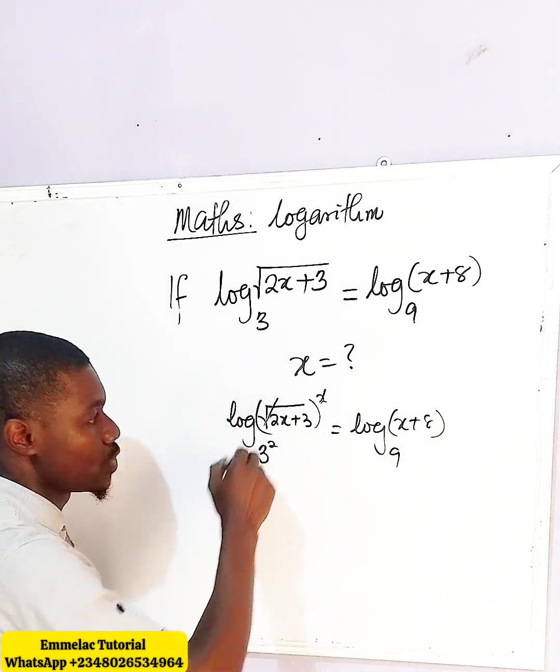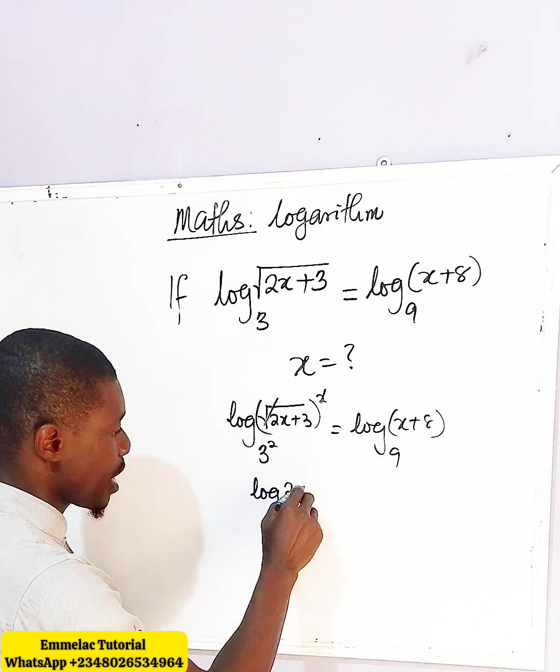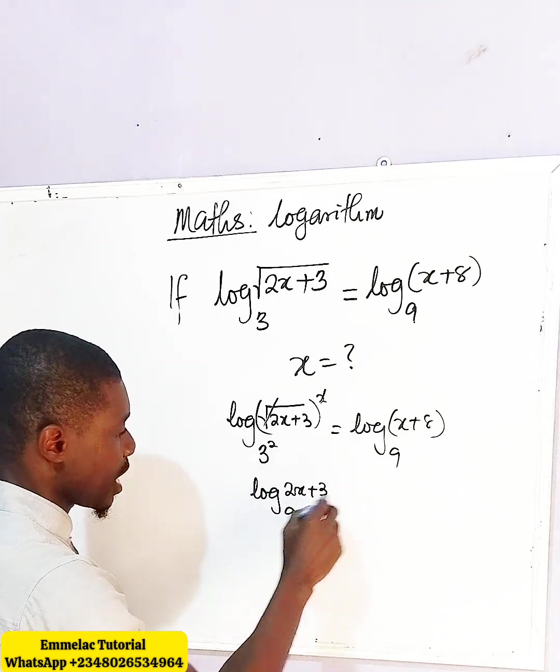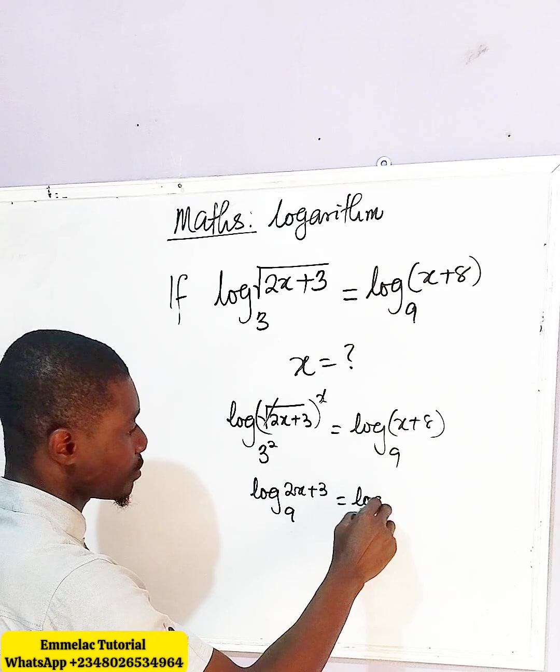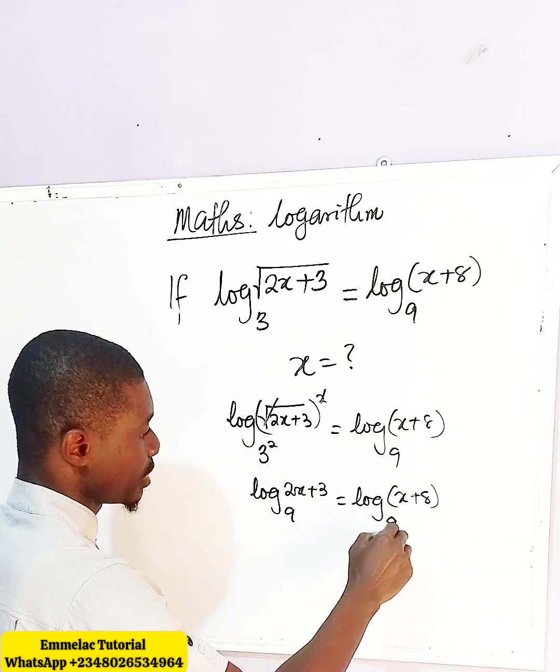The power of 2 undoes the square root, so we are left with log base 9 of 2x plus 3 equals log base 9 of x plus 8.